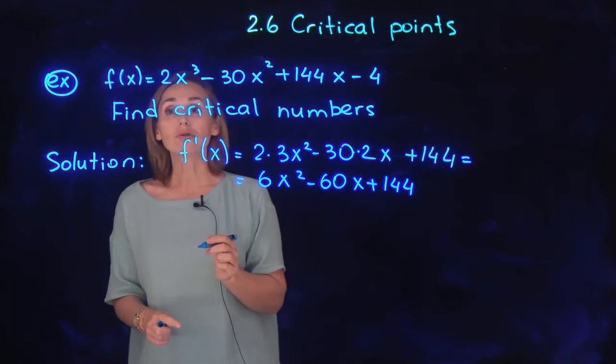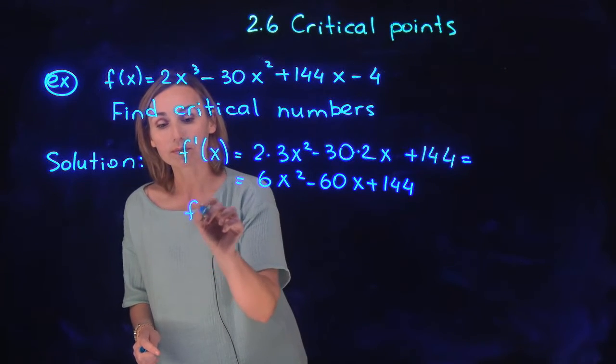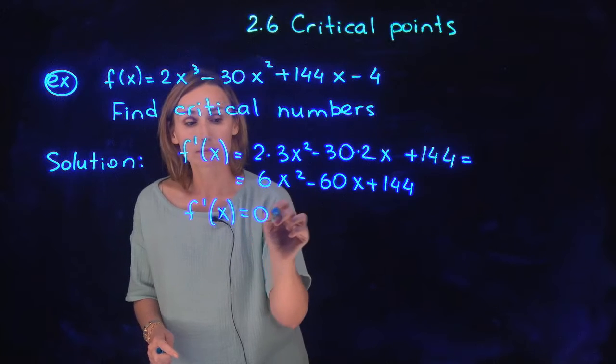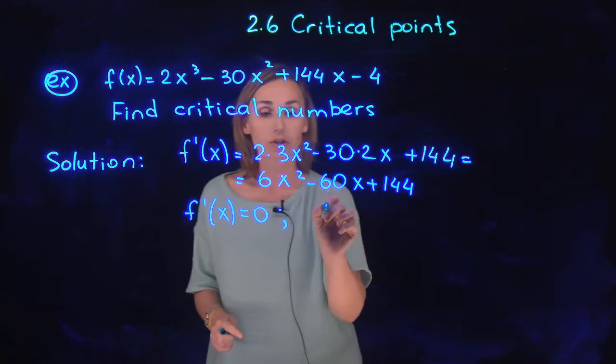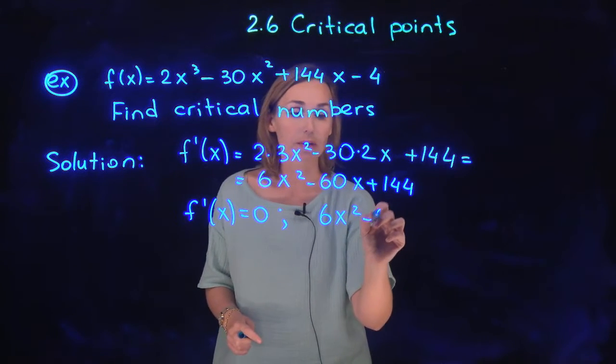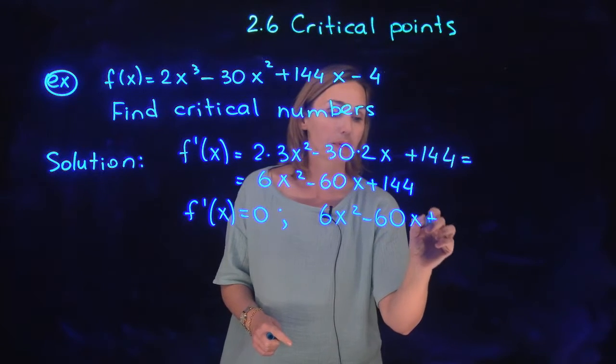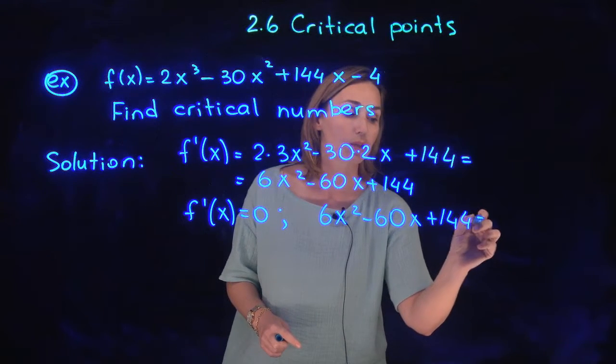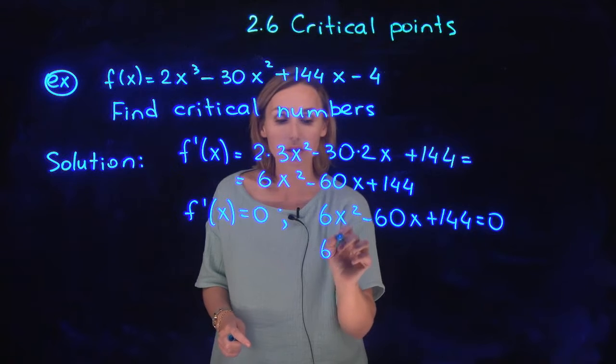And you need to make it equal to zero, so that this expression 6x squared minus 60x plus 144 equals zero. Factor out 6.